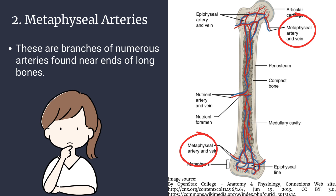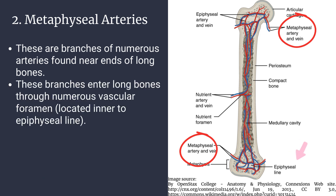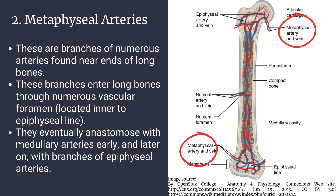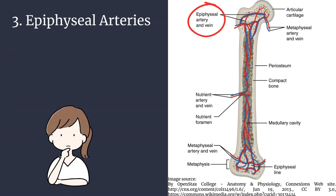Number two: metaphyseal arteries. These are branches of numerous arteries found near the ends of long bones. These branches enter the long bones through numerous vascular foramina located inner to the epiphyseal line. They eventually anastomose with medullary arteries early and later on with branches of epiphyseal arteries.